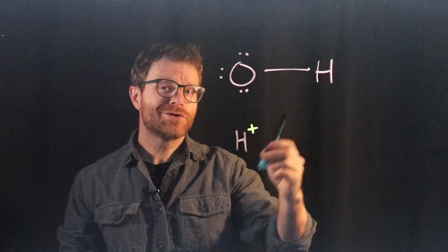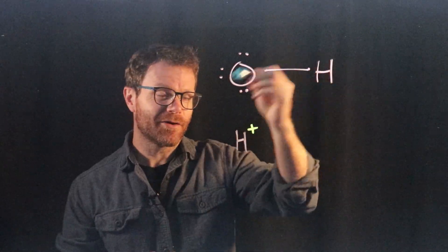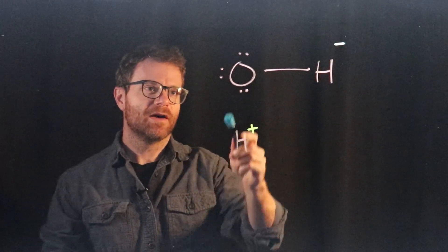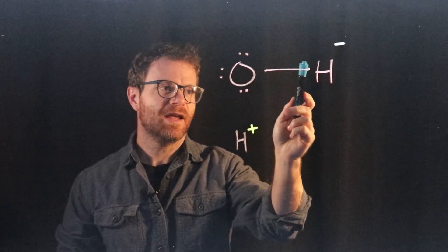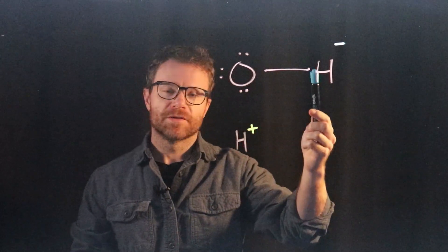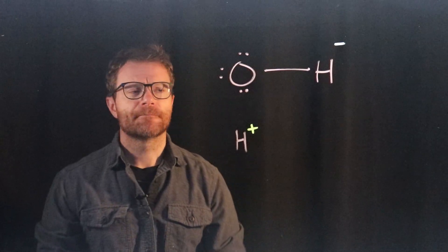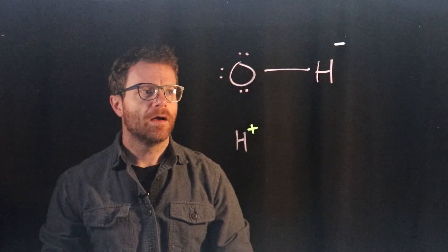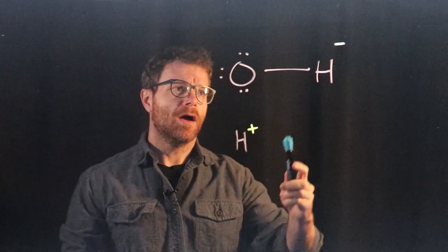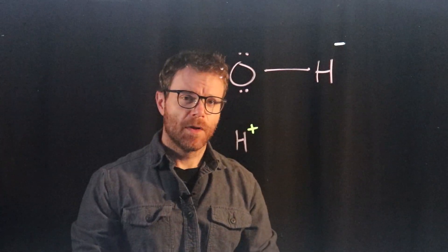But in doing so, since this hydrogen lost an electron, it gains a positive charge and becomes a hydrogen ion. This OH altogether has now gained a negative charge because it now has one, two, three, four, five, six, seven, eight electrons. And only six plus one, seven protons for a total of one extra electron.